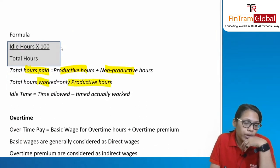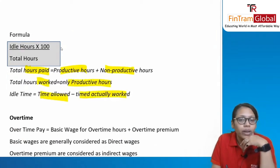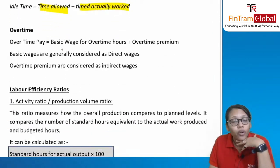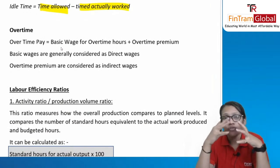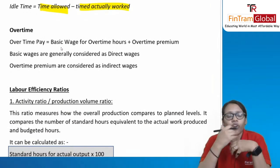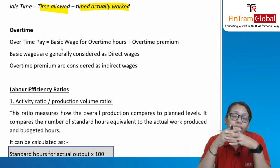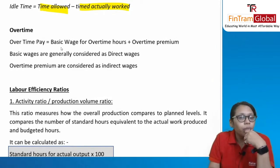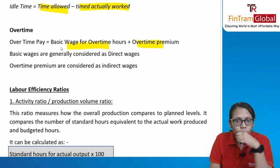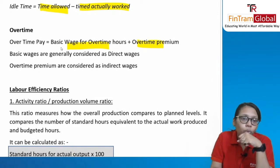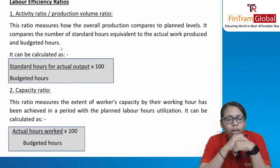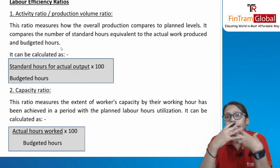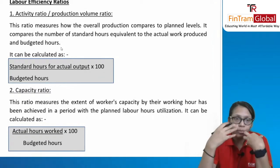Overtime is the time worked beyond normal hours. The basic wage for overtime is a direct wage; overtime premium is an indirect wage. Labor efficiency ratios: Activity (Production Volume) Ratio = standard hours ÷ budgeted hours × 100 — compares overall production to planned level. Capacity Ratio = actual hours worked ÷ budgeted hours × 100 — measures worker capacity utilization. Efficiency Ratio = standard hours ÷ actual hours × 100 — measures labor force efficiency.